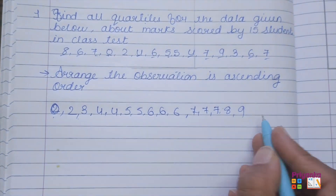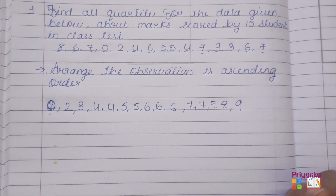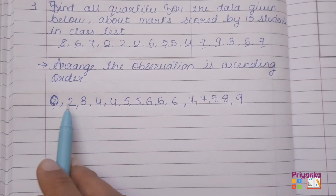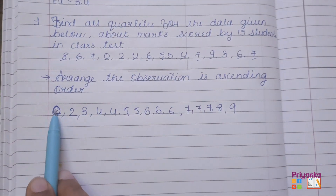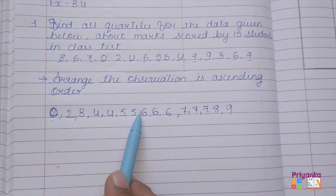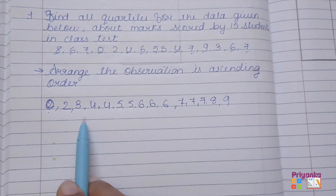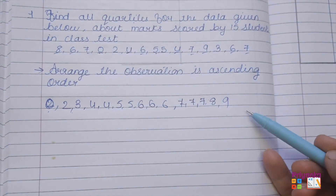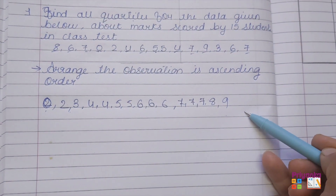After arranging, count the observations again to confirm there are 15 students. Count: 1 through 15. The arrangement of observations in ascending order is confirmed with all values included.